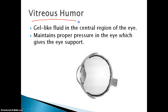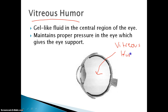Then we have the vitreous humor — that is the gel-like fluid in the central region of the eye, very similar to aqueous fluid, just in a different place. In some textbooks they call it vitreous gel or vitreous fluid. Just know that it's the fluid that takes up the majority of our eye, and the pressure from the vitreous humor gives the eye support.